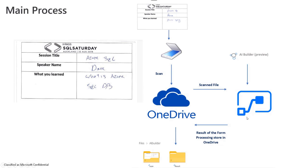I used a Power Automate and AI Builder combination so that automatically, any time a new picture is added to OneDrive, AI Builder is applied to that picture, extracts the information, and saves it to another folder with the results. This is a really good automation process. Finally, I used Power BI and Power Query to clean the results through that process. I'm going to show you the process now.